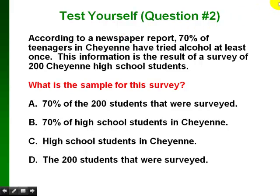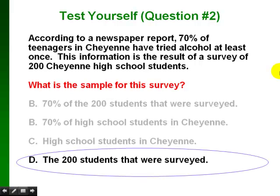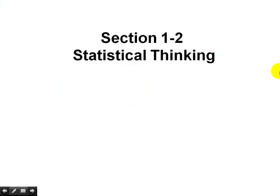Another question from the same survey: what is the sample? Is it the 70% of the 200 students surveyed, 70% of high school students in Cheyenne, high school students in Cheyenne, or the 200 students that were surveyed? The correct answer is the 200 students that were surveyed. The sample has to be everyone that was actually surveyed, so that would be the 200 high school students.